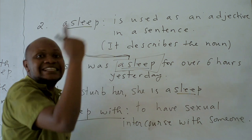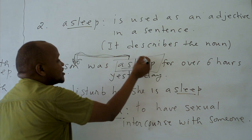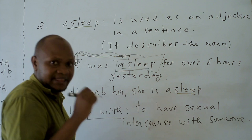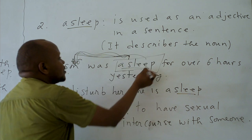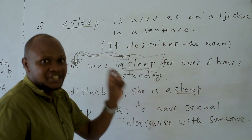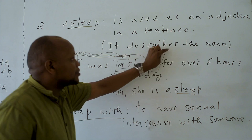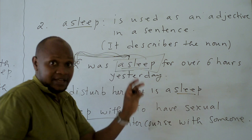She was asleep. He was asleep. When you say my son was asleep, you are describing the action your son was doing at that time. For example: he was asleep, she was asleep, I was asleep, we were asleep. My son was asleep for over six hours yesterday. Where is John? John is asleep.